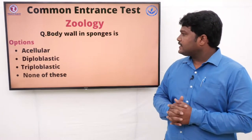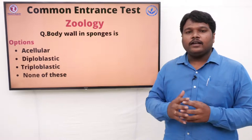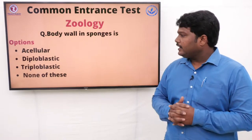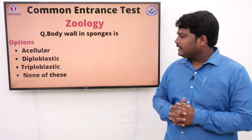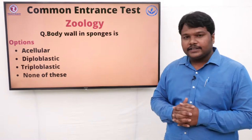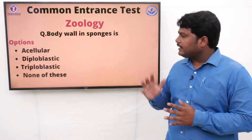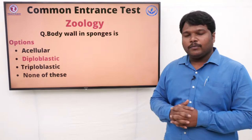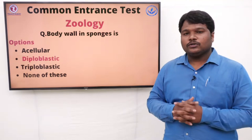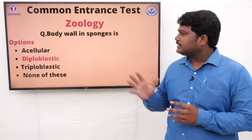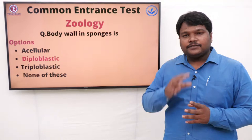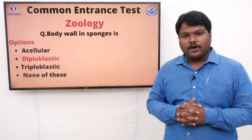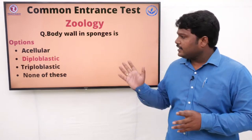Question 9: Body wall in sponges is. Options: A) Acellular, B) Diploblastic, C) Triploblastic, D) None of these. The right option is diploblastic. Diplo means two, so diploblastic cells are the type present in the cell wall of sponges.